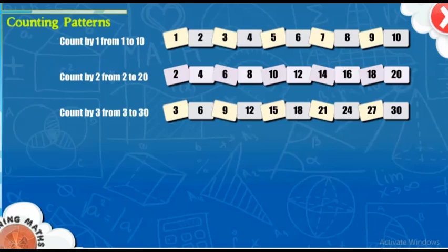Count by 3 from 3 to 30. 3, 6, 9, 12, 15, 18, 21, 24, 27.